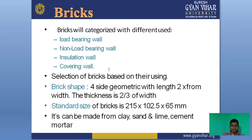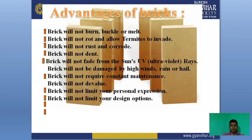Bricks are basically made from clay, sand, and lime. Some bricks are also made by cement concrete, known as concrete blocks. This is the total manufacturing process of bricks. Now let's discuss the basic advantages of bricks.